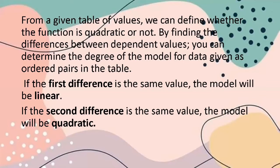From a given table of values, we can identify whether a function is quadratic or not by finding the differences between dependent values. If the first differences of the y-values are the same, the model is linear — not quadratic. If the first differences are not the same but the second differences are equal, then the table of values represents a quadratic function.